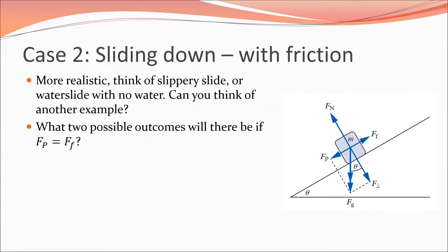Case two: sliding down with friction. The only difference here is we've got friction opposing the acceleration down the ramp — three forces to look at. Think of a slippery slide in the park or a water slide. There's always some friction holding you back. If the force parallel to the incline and the force of friction are equal to each other, the net result is that acceleration is zero — no net acceleration. If the object is stationary, it stays stationary; if the object is moving, it will continue to move until an external force acts on it.